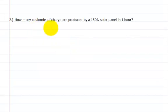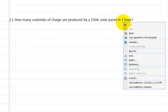Now, next one. How many coulombs of charge are produced by a 150 amp solar panel in one hour? Again, we have to convert the hours into seconds. So let's do that first.